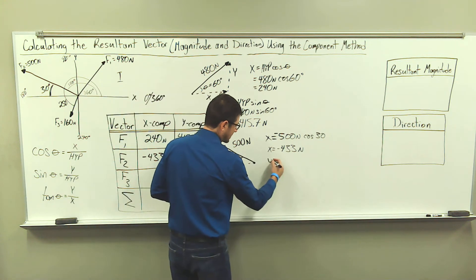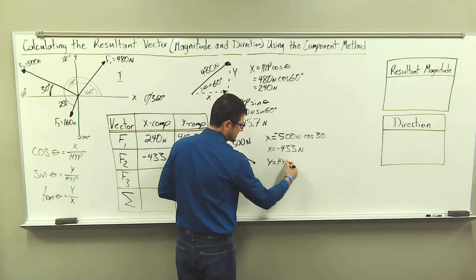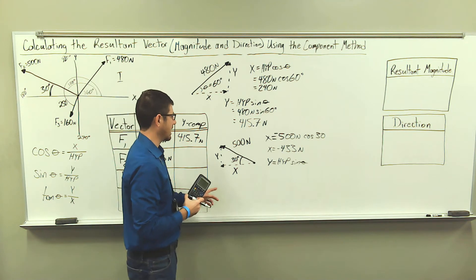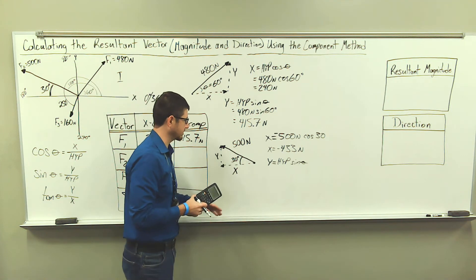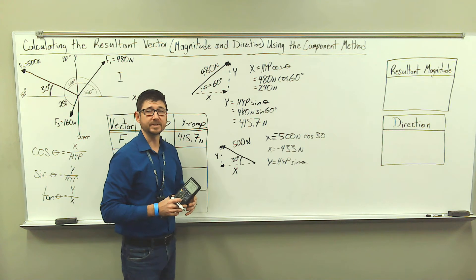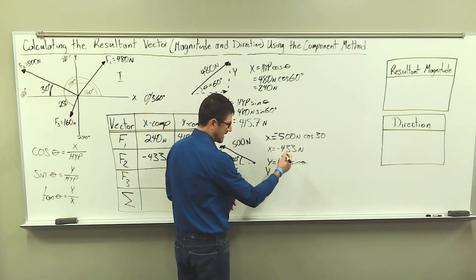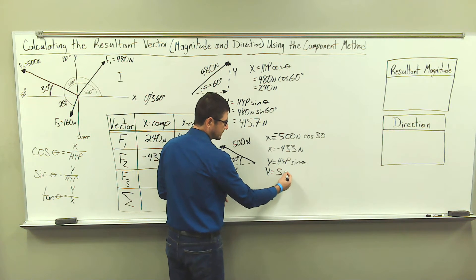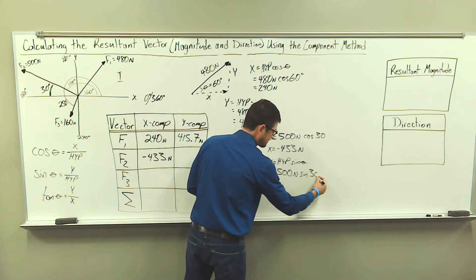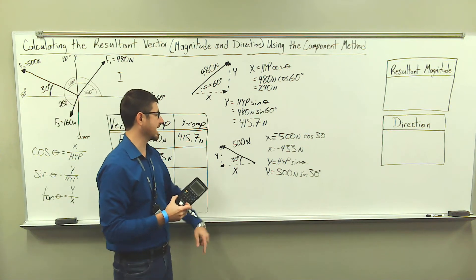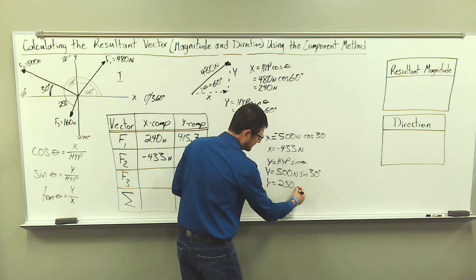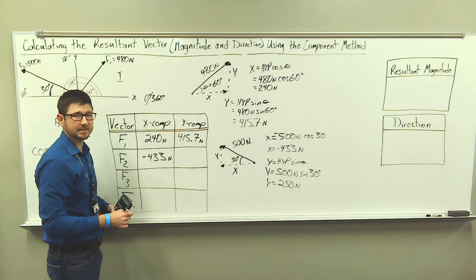For the y component, y is equal to the hypotenuse times sine of angle theta, our reference angle. The hypotenuse is 500 newtons, and we need to ask ourselves, are we moving in a positive or negative y direction? We're moving in a positive y direction. So positive 500 newtons times sine of 30 degrees — we know that sine of 30 is one-half, so one-half times 500 newtons gives us a y component of 250 newtons. We need to put that in the table.